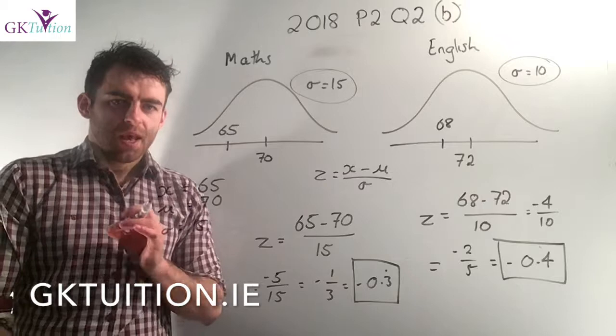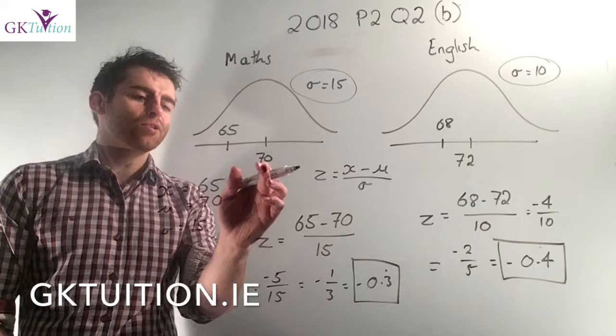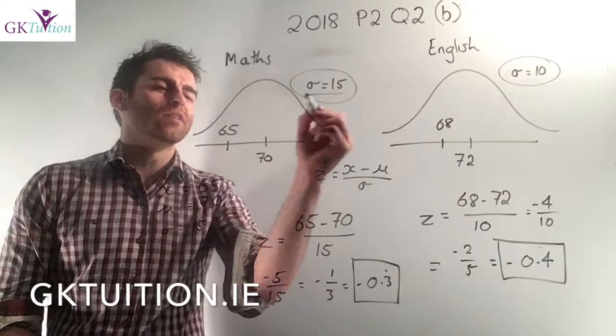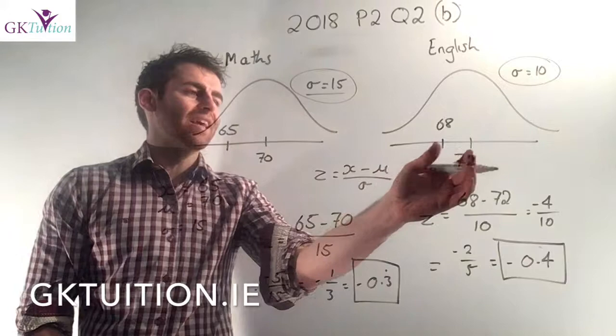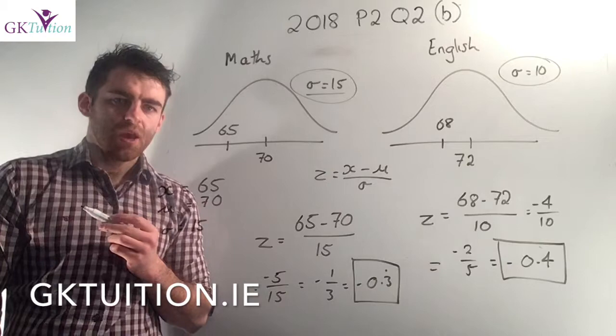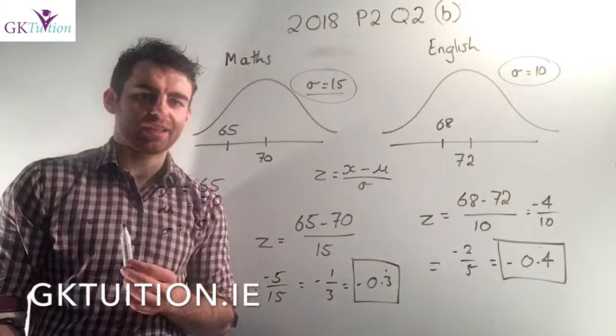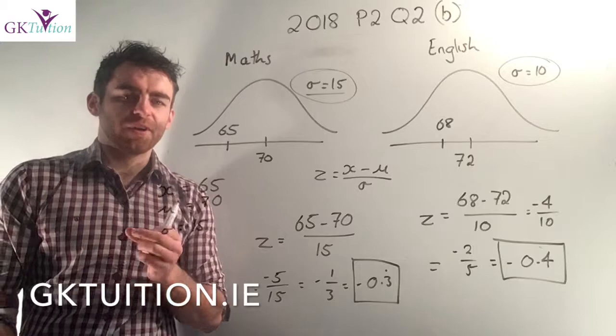Mary sits two different tests. In the first test, a maths test, the average result in the class was 70 and the standard deviation was 15 — you can view the standard deviation as a measure of the variability of the data. In the English test the average result was 72 but the standard deviation was 10. Mary got 65% in her maths test and 68% in her English test, so in both cases she's a little bit below the mean.